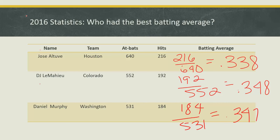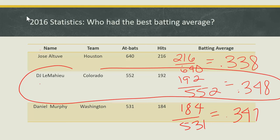Now let's rank them. The best batting average is the highest number: 0.348, so DJ LeMahieu was number one; 0.347 is number two, Daniel Murphy; and Jose Altuve was third at 0.338.